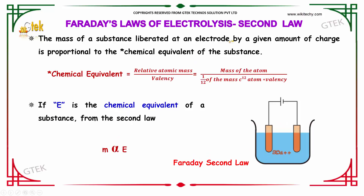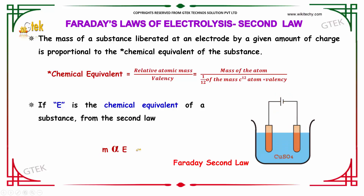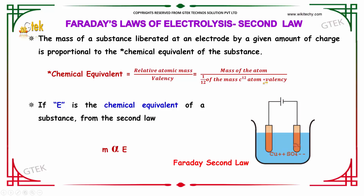Faraday's second law of electrolysis states that the mass of the substance liberated at an electrode by a given amount of charge is proportional to the chemical equivalent of the substance. The mass is directly proportional to the chemical equivalent, where chemical equivalent is equal to relative atomic mass divided by valence. For carbon, it is the mass of the atom divided by one-twelfth of the mass of the carbon atom, multiplied by the valence.